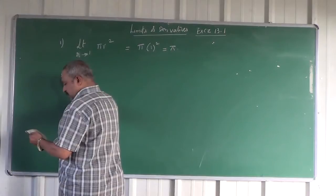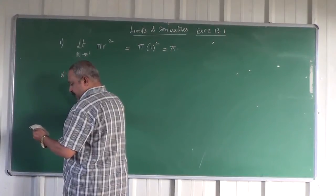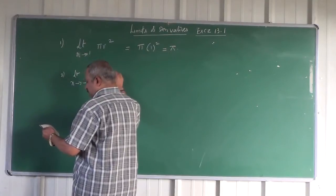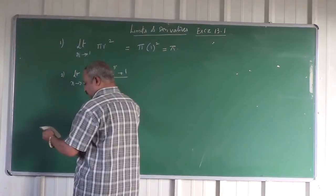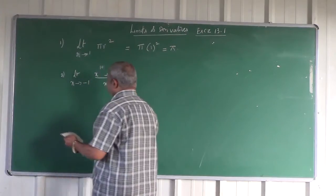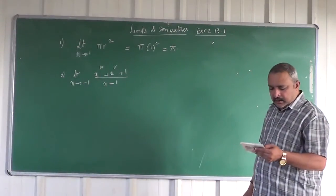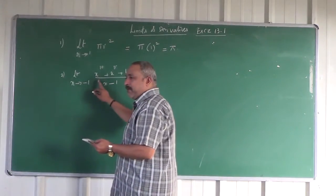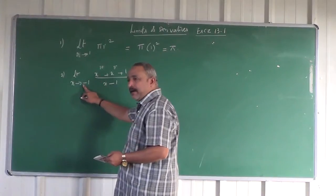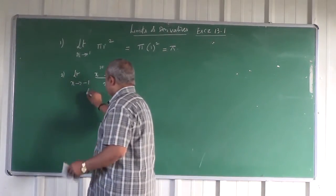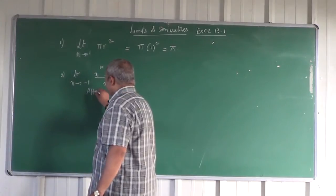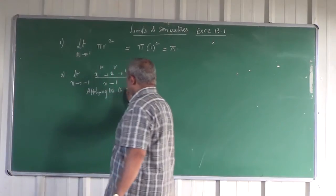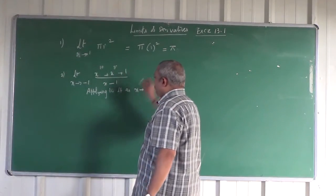Next, limit extending to -1 of (x^10 + x^5 + 1)/(x - 1). You can directly apply the limit, and once you apply the limit, directly stop writing the limit sign. Applying the limit as x tends to -1.